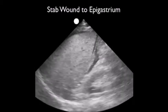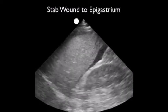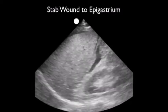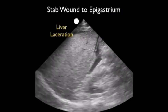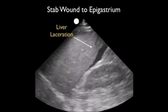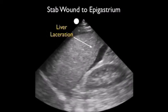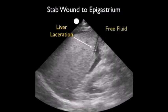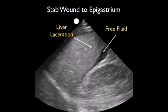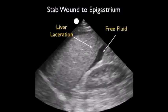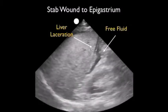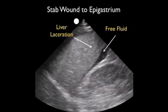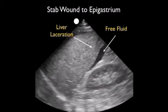Here's a video clip from a patient who was stabbed with a large knife to the epigastric region. As we look at the right upper quadrant, we can see a linear liver laceration extending through the medial aspect of the liver. We also appreciate a large amount of fresh fluid — that dark or anechoic collection — layering out posteriorly to the liver and extending into Morrison's pouch, the hepatorenal interface.